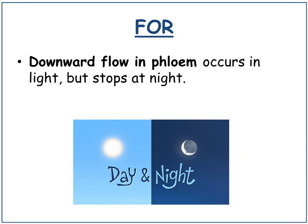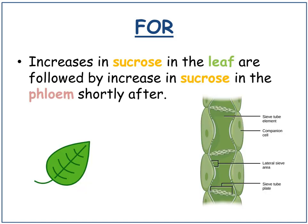The downward flow in the phloem occurs in the light but stops at night. Additionally, increases in sucrose in the leaf are followed by increases in sucrose in the phloem shortly after.